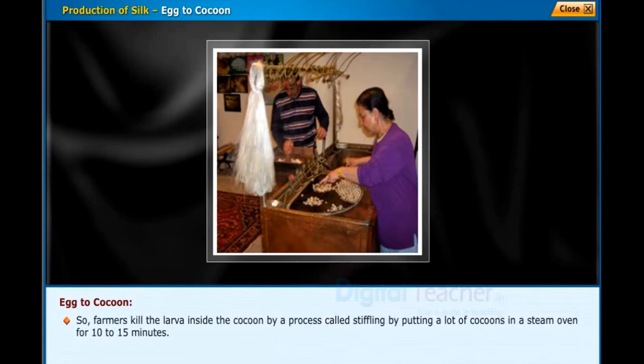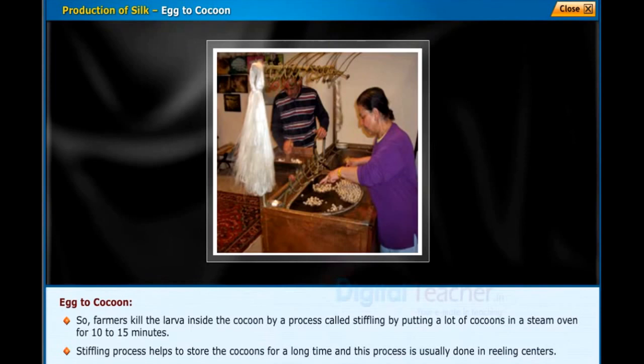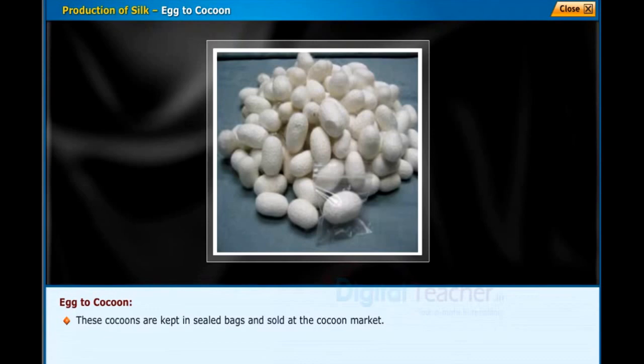So farmers kill the larvae inside the cocoon by a process called stifling — by putting a lot of cocoons in a steam oven for 10 to 15 minutes. The stifling process helps to store the cocoons for a long time, and this process is usually done in reeling centers. These cocoons are kept in sealed bags and sold at the cocoon market.